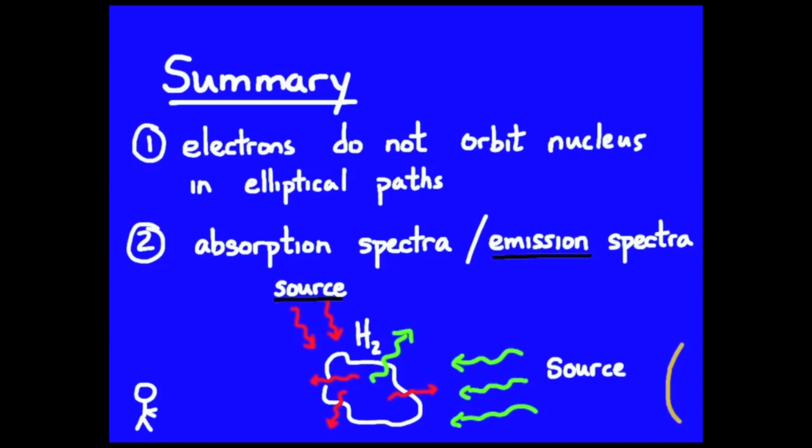If your source comes from behind the matter that's being excited by the light, then you're going to see an absorption spectrum. The reason for this is a lot of those photons from the source will come right on through for the observer.